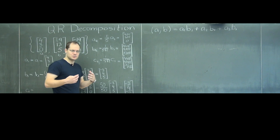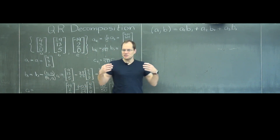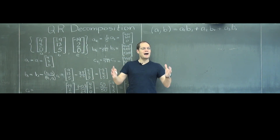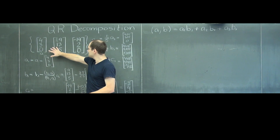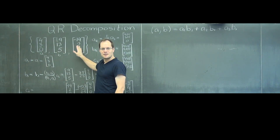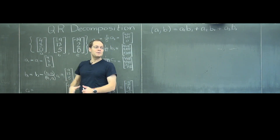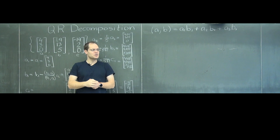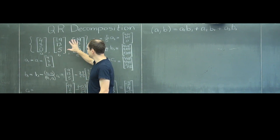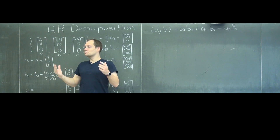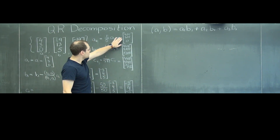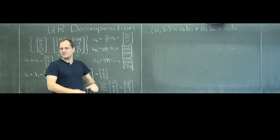What linear algebra — especially matrix algebra — likes to do is to combine things. Not think of things as three individual vectors, but as a 3x3 matrix. So we're going to relate this 3x3 matrix, the original one, to the 3x3 matrix whose columns are these vectors.